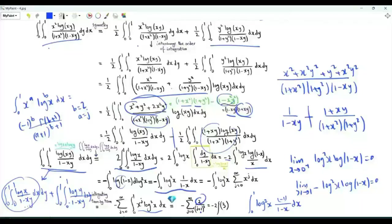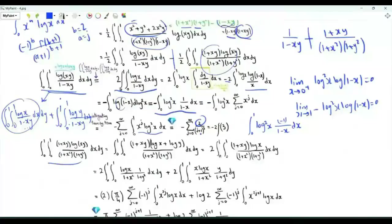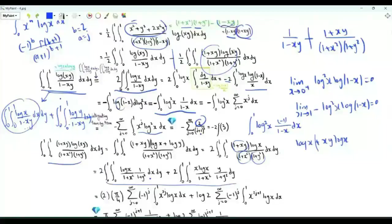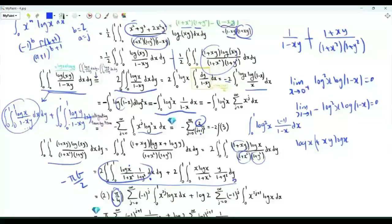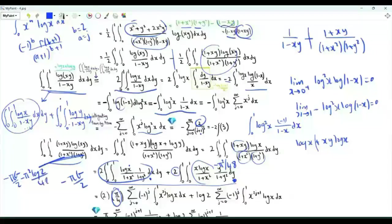For the second double integral, we write log(xy) as log x plus log y, giving two equal double integrals. So it equals 2 times the integral from 0 to 1 (both x and y) of (1 plus xy) log x over (1 plus x²)(1 plus y²). Splitting the numerator into log x plus xy log x: for the first part, integrating with respect to y gives pi over 4, and the integral with respect to x equals minus Catalan's constant G, giving minus pi G over 2. For the second part, integrating with respect to y gives log 2, and the integral with respect to x from the second page equals minus pi² over 48. So this double integral is minus pi G over 2 minus pi² log 2 over 48.